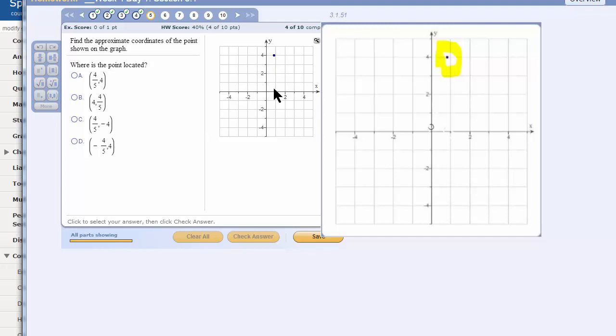But it's not quite to positive 1. So I am going to guess that the x-coordinate—it's certainly not negative, is it? So it could only be A because 4 fifths is almost 1, and that's almost at 1 on the x-axis and 4 on the y-axis. So I'll click on A.